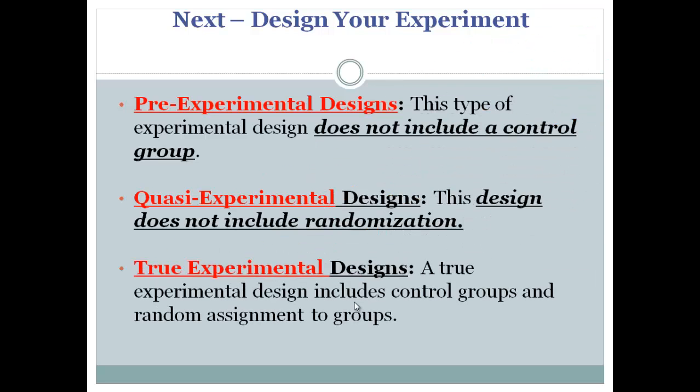The third type of experiment is considered true experimental design. This includes both the elements that the pre-experimental design and the quasi-experimental design lacks. There are control groups, and they do put an emphasis on random assignment, random sampling and random assignment to the compare groups. So you're going to have to know those terms for the AP test. They do pop up on occasion.